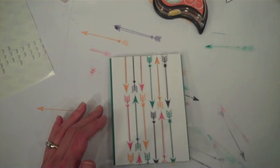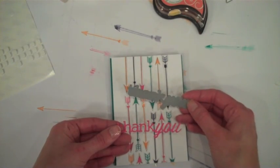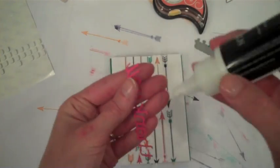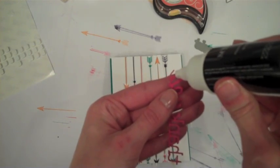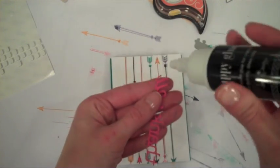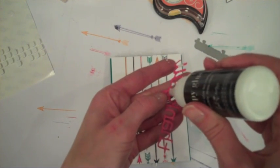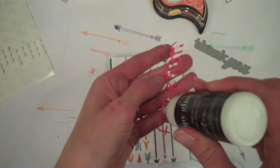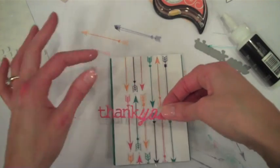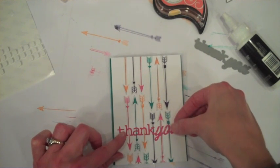And then for our sentiment I have a die cut here, thank you die cut, which I die cut from Raspberry Fizz cardstock using the Wonderful Words Thank You die. And I'm just going to take a little bit of liquid adhesive and adhere that. I'm just going to adhere that right about there layered over top of our die cut panel.